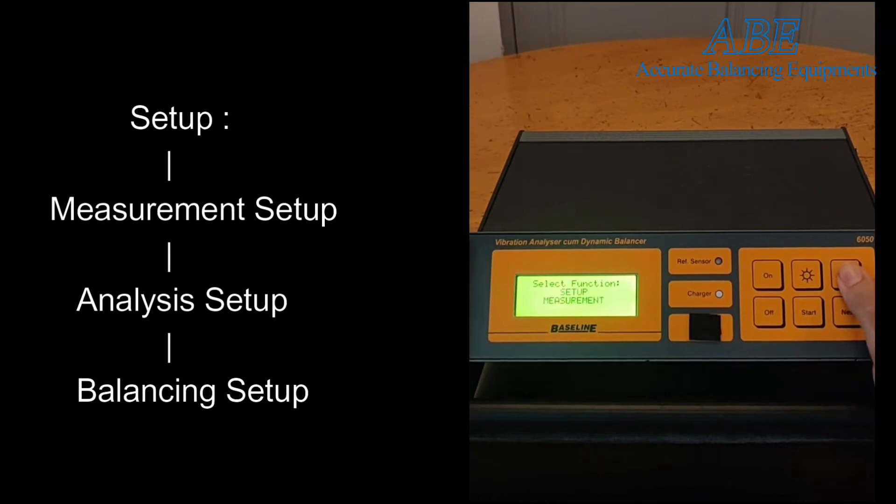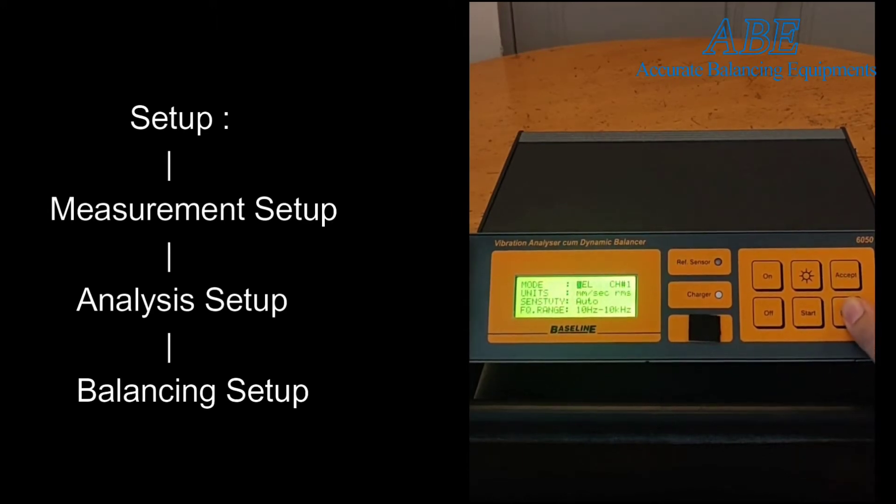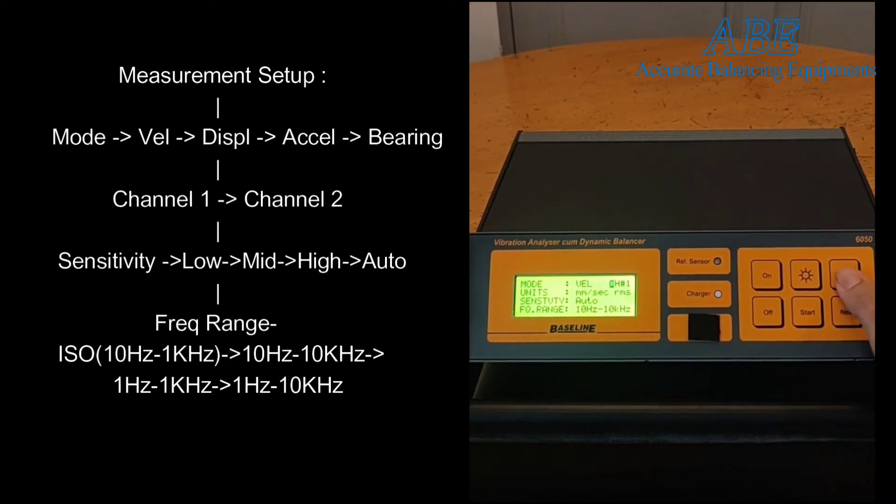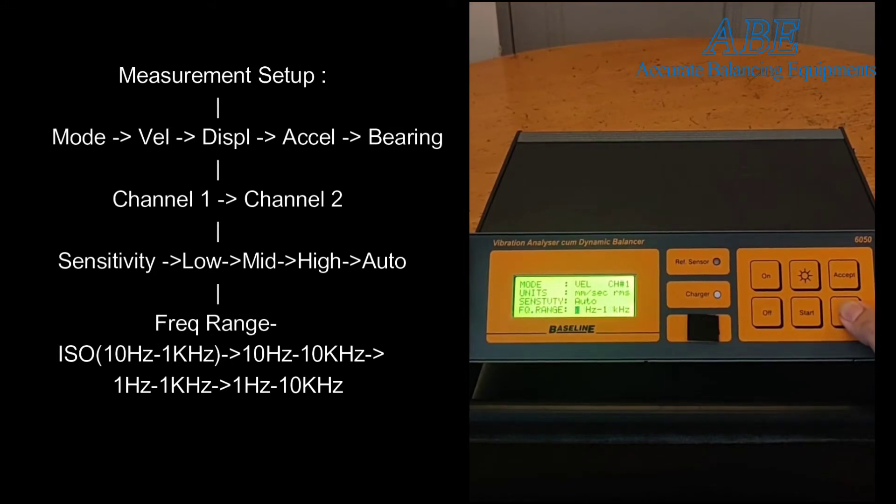Inside setup, you can configure the 6050 for measurement, analysis, and balancing. Inside measurement setup, you can firstly select the vibration units, then toggle between channel 1 and channel 2 of the instrument. The cursor then moves to the sensitivity, which cycles between high, low, mid, and auto. Next, the frequency range may be selected from the options.